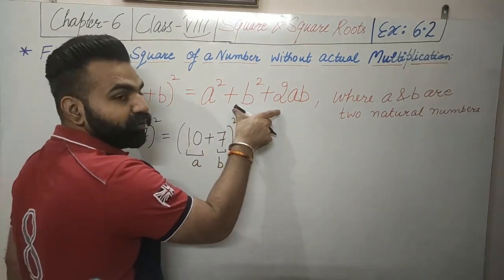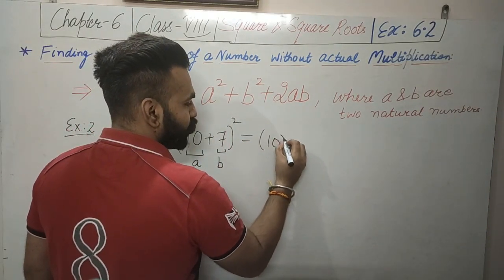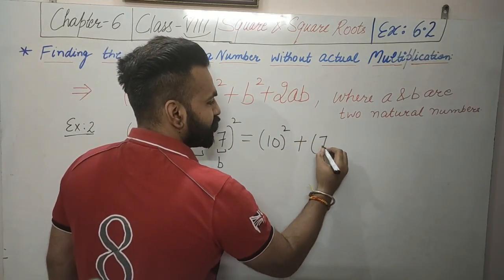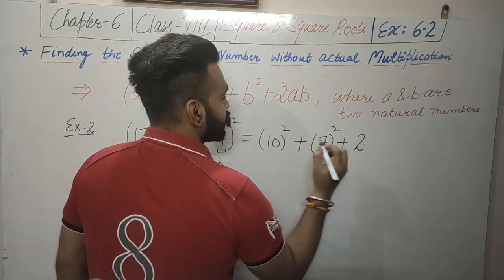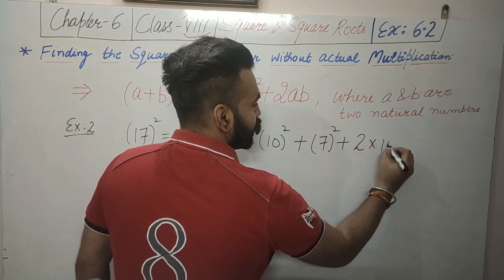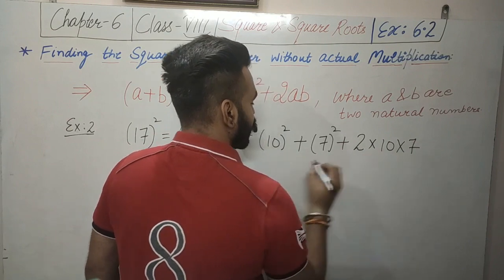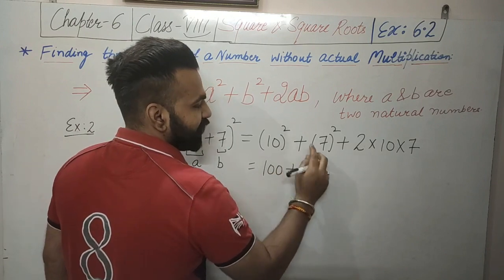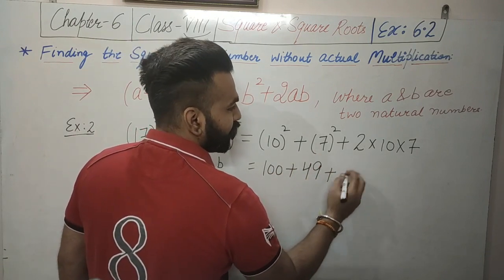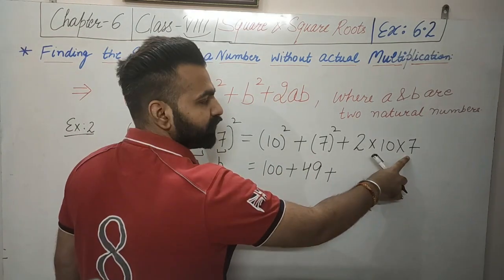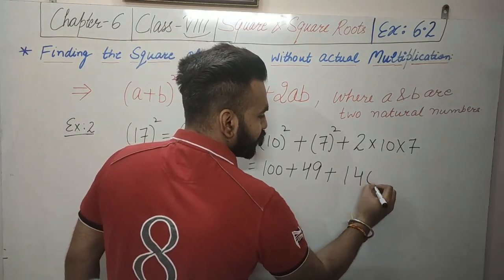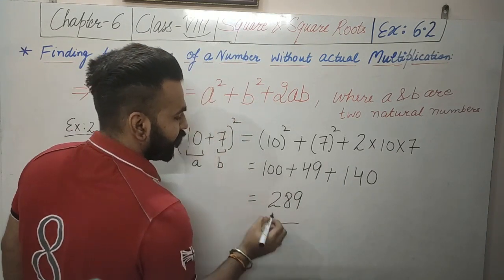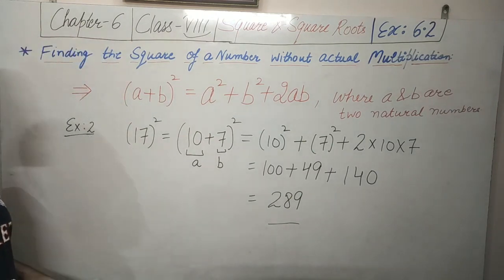We will put the values of a and b on the right-hand side: 10 squared plus 7 squared plus 2 times 10 into 7. Now 10 squared is 100, 7 squared is 49, and 2 into 7 is 14, and 14 into 10 is 140. If we add 100, 49, and 140, this becomes 289. So 17 squared is 289.